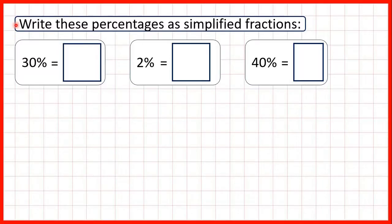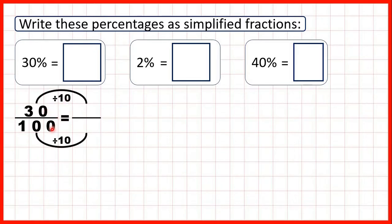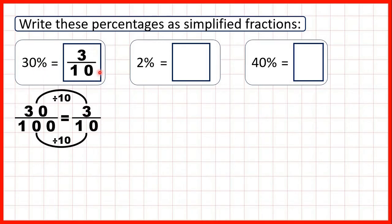We need to write these percentages as simplified fractions. First we have 30 percent. We know that a percentage is a fraction with a denominator of a hundred, so we can write 30 percent as 30 over a hundred. To simplify fractions we need to find equivalent fractions that use smaller numbers, so we use division. The highest common factor of 30 and 100 is 10, so we can divide both the numerator and the denominator by 10. 30 divided by 10 is 3; 100 divided by 10 is 10. So 30 percent is the same as 3 tenths.